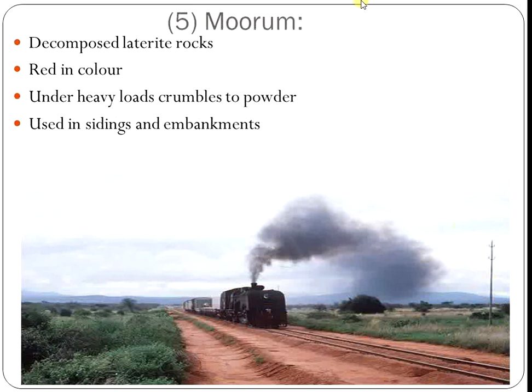The next type is murum. It is made of decomposed laterite rocks and is red in color. Under heavy loads it crumbles to powder. It is used in sidings and embankments.